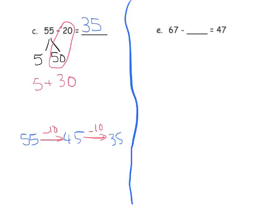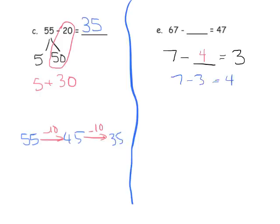For question e, students might not immediately know they can subtract 67 minus 47 to find the missing part of the subtraction problem. You may need to do some prep work — for example, showing something like 7 minus what equals 3, and having students recognize the missing value is 4, since 7 minus 3 equals 4. This is similar to fact families.